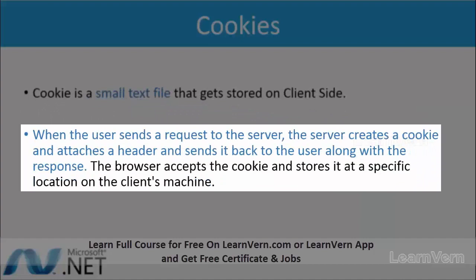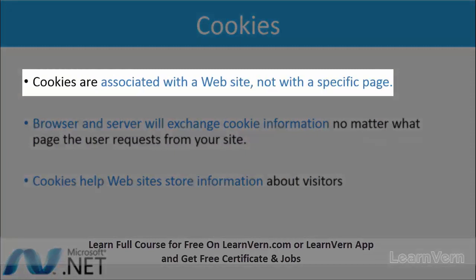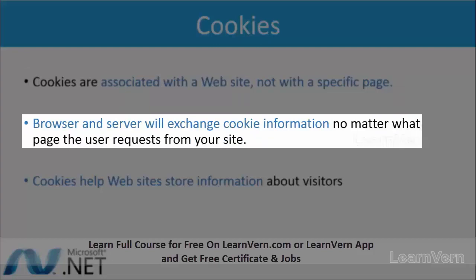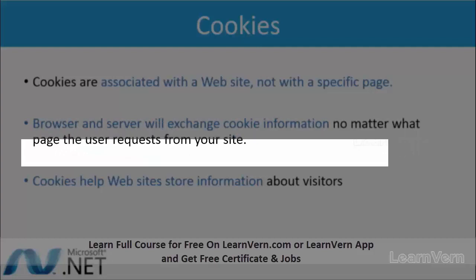When the user sends a request to the server, the server creates a cookie file which is a header with the rest of the information. When the server sends a response to the client, the cookie file is also sent, and then the browser accepts the cookie and stores it on the client's machine. Cookies are associated with a website — they are maintained for the whole website, not only for a page. The browser and server will exchange cookie information no matter what page the user requests from the site.